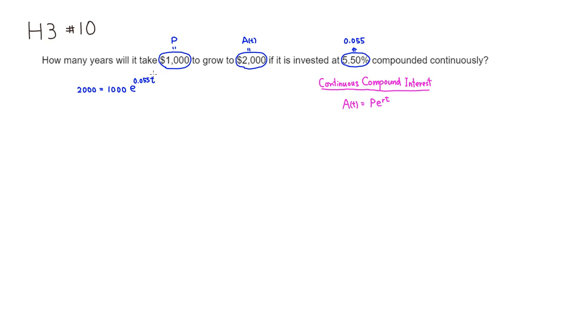So let's solve this equation. First thing I'm going to do is I'm going to get rid of this 1,000. So we can simply divide through by 1,000.